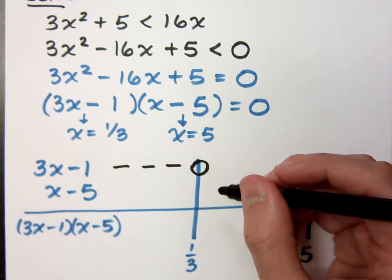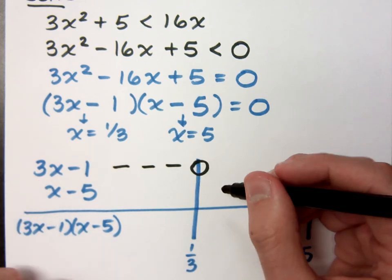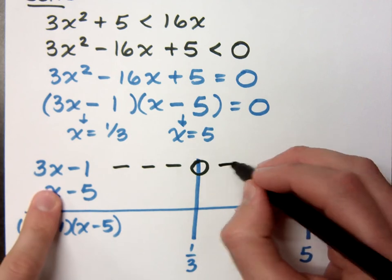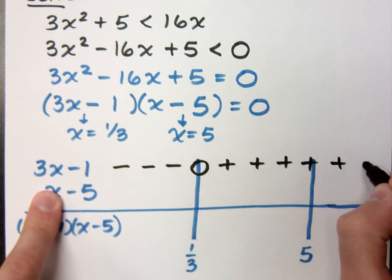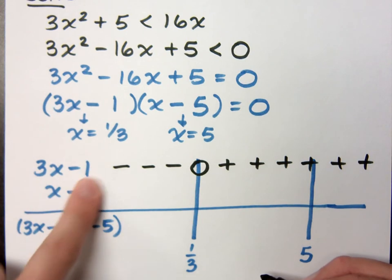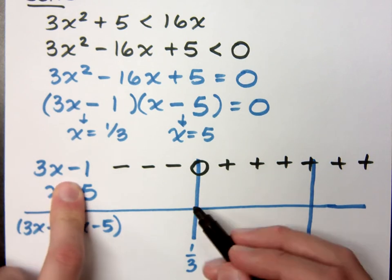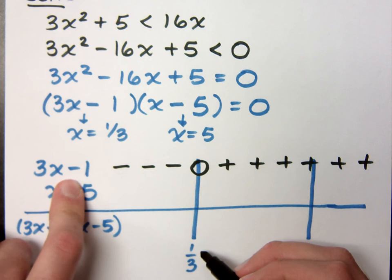But when you plug in values positive than 1/3, like 1, 2, 3, you get values that are positive all the way over here. Because the only time that this factor changes signs is at 1/3. That's the only time he has the opportunity to change signs.